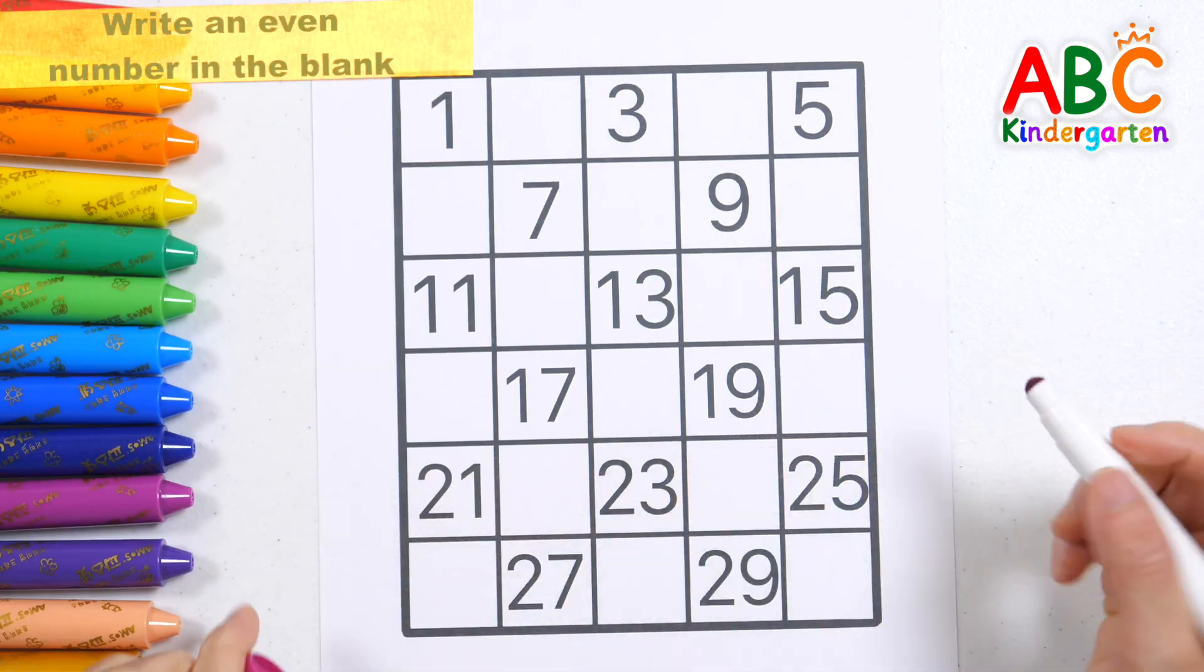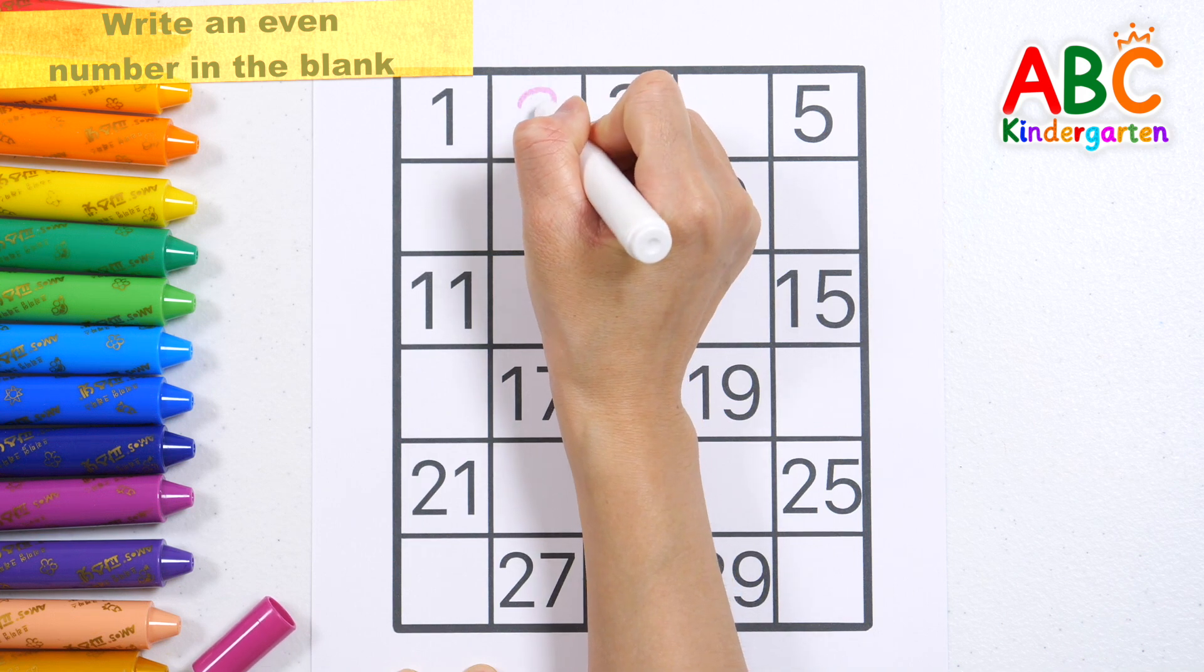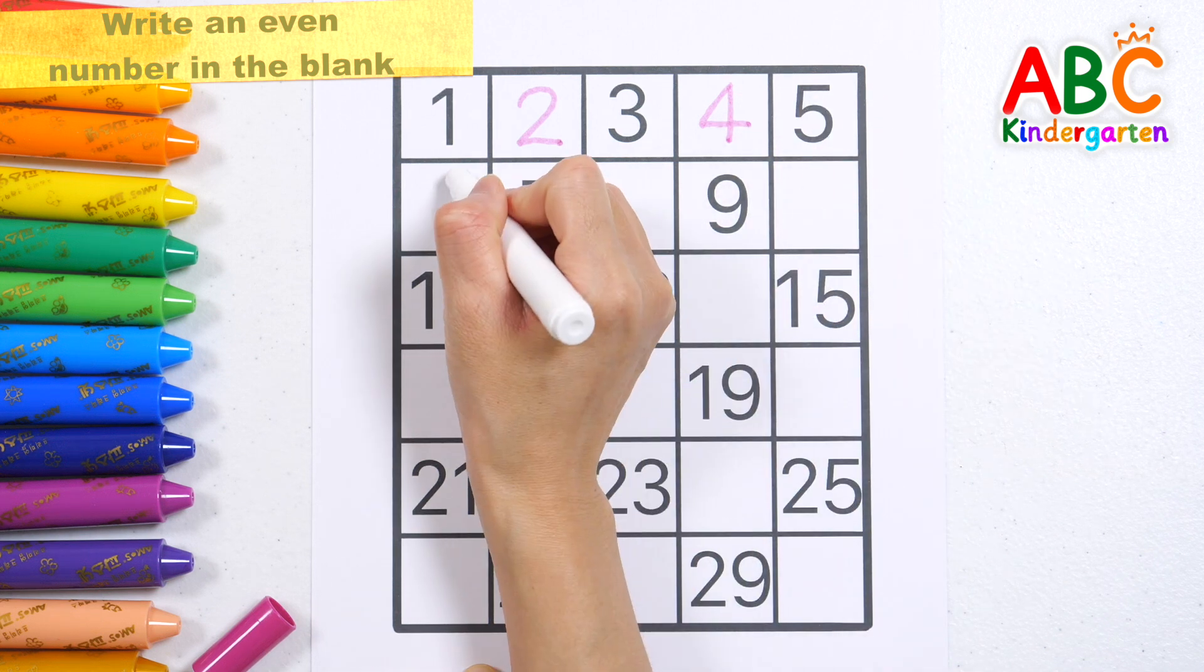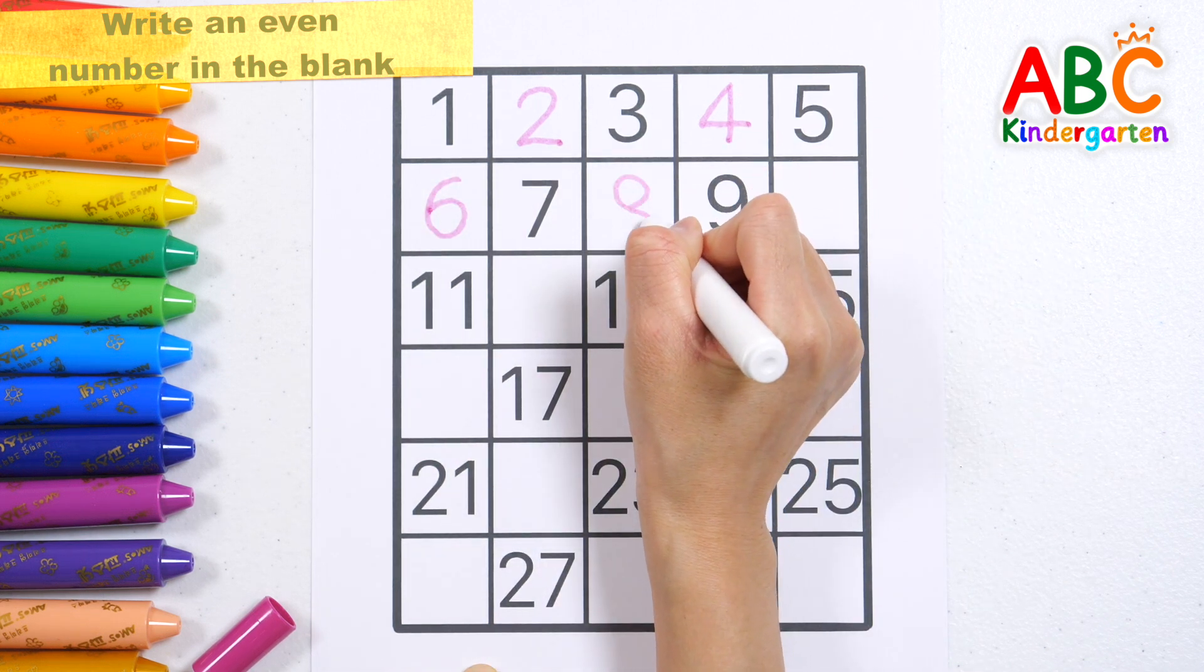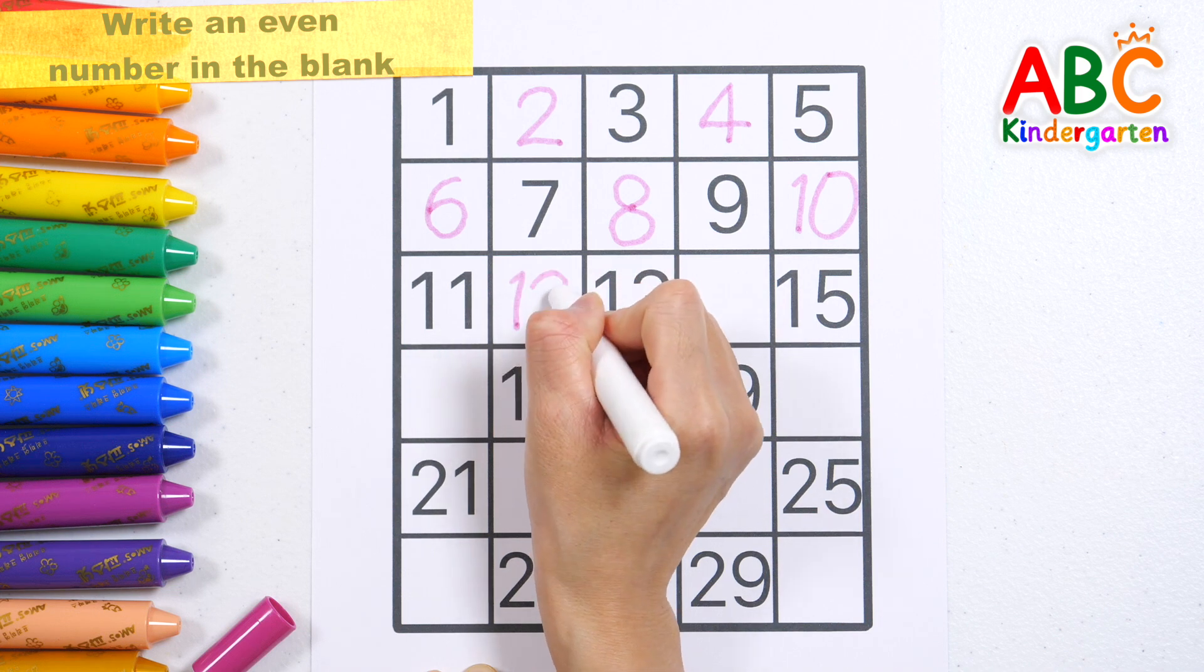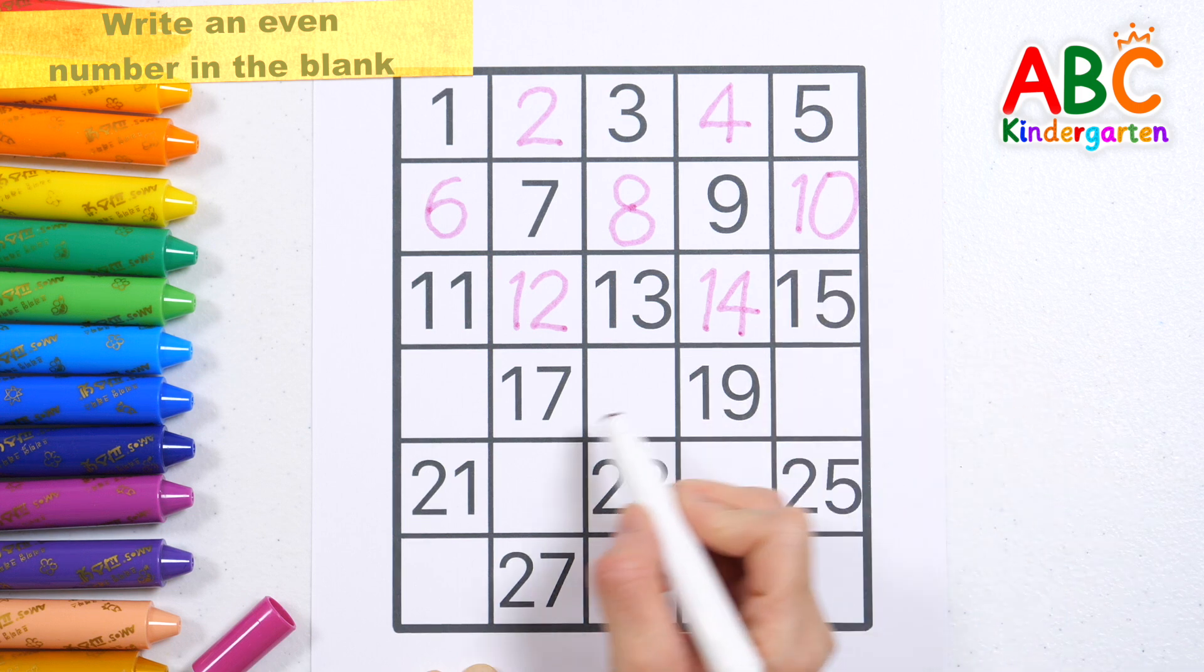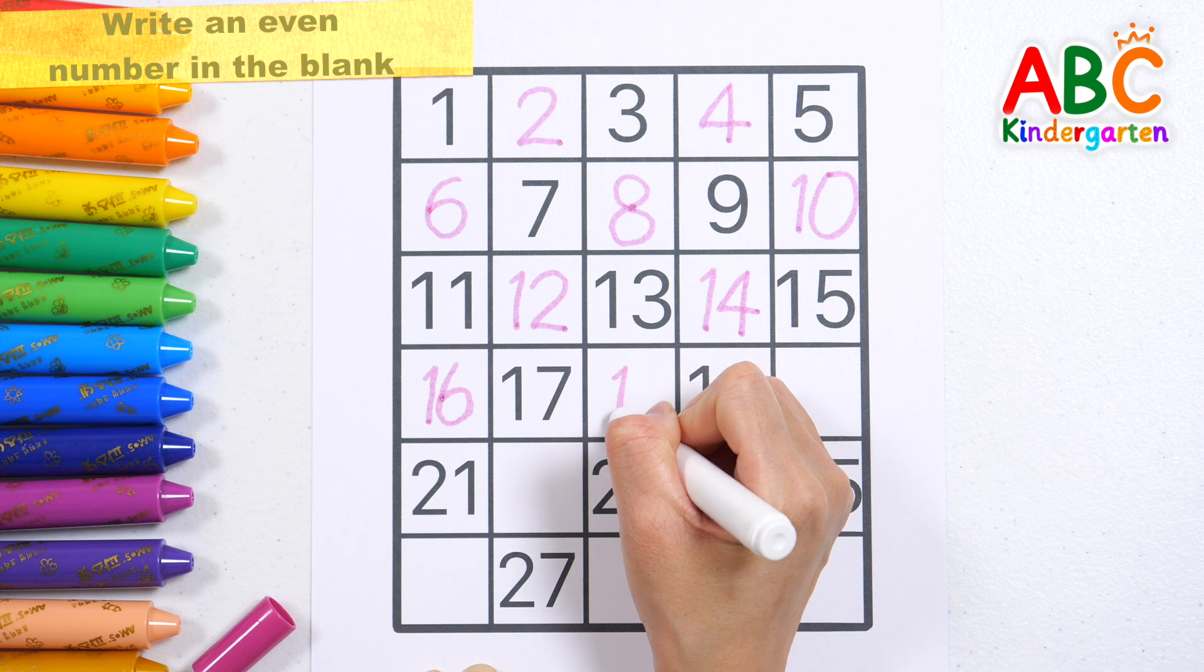Let's write even numbers from one to thirty in the blank spaces. 2, 4, 6, 8, 10, 12, 14, 16, 18.